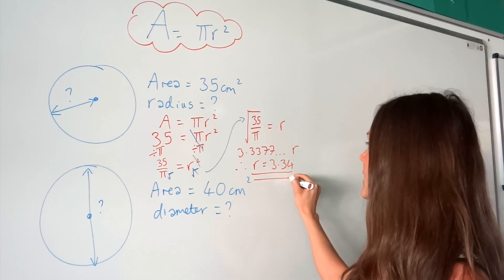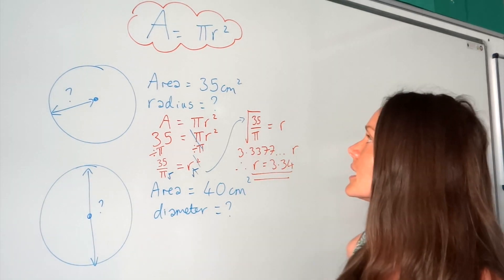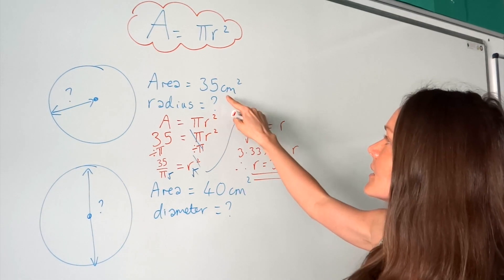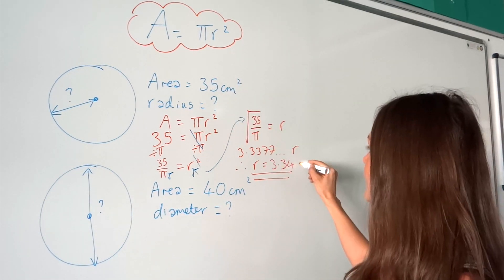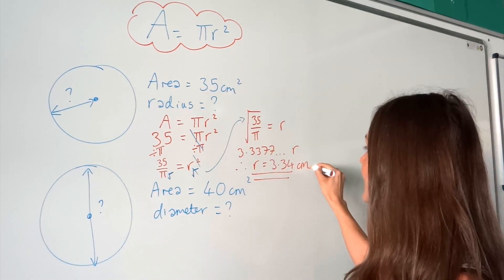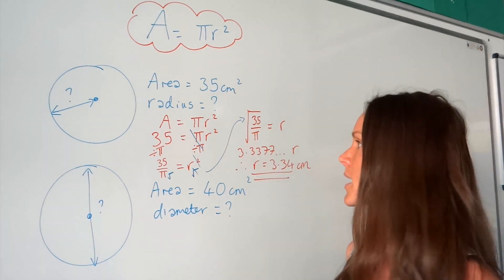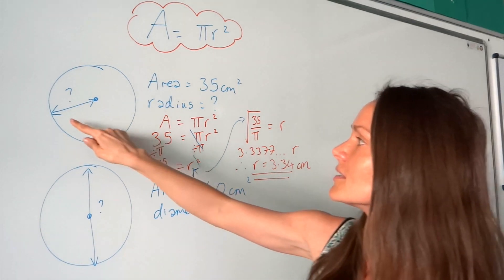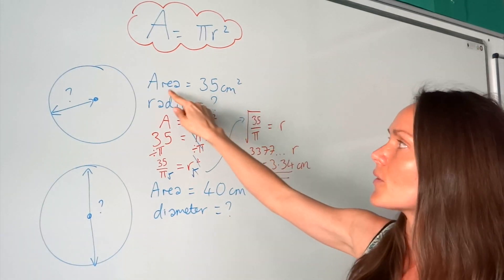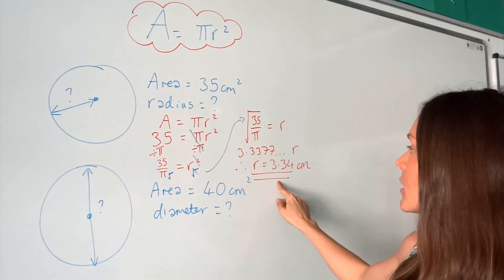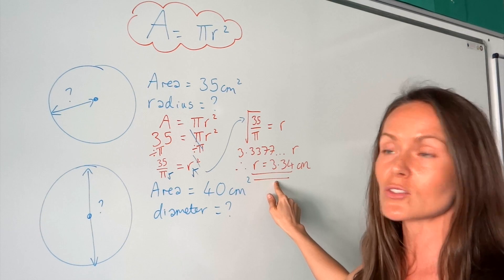So I've found the radius. Don't forget the units — in this question it's centimetres squared for area, so the radius is in centimetres. Be careful, it's not centimetres squared, because this is a distance. It's only squared when it's for area. So that's the final answer — that's the radius for the first question.